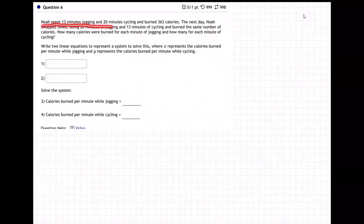Noah spent 13 minutes jogging and 20 minutes cycling and burned 363 calories. The next day, Noah swapped times doing 20 minutes jogging and 13 minutes of cycling and burned the same number of calories. How many calories were burned for each minute of jogging and how many for each cycling? Write your two equations and then solve them.